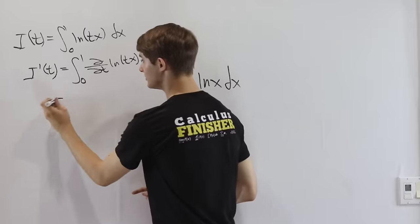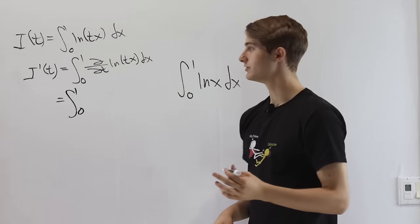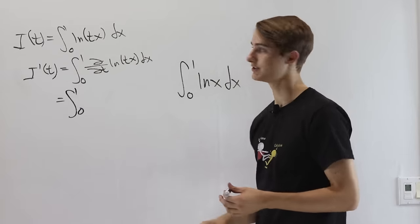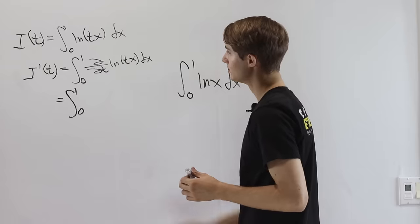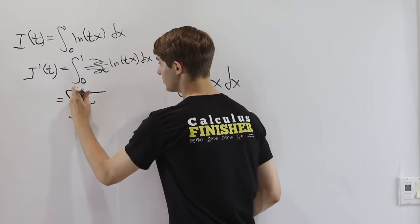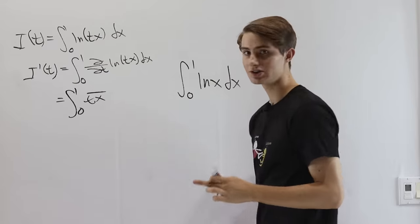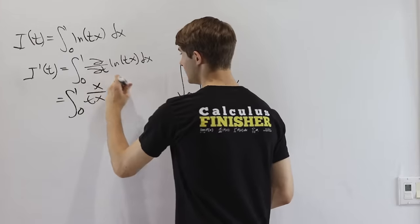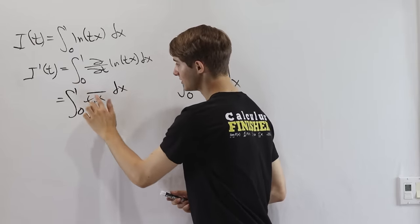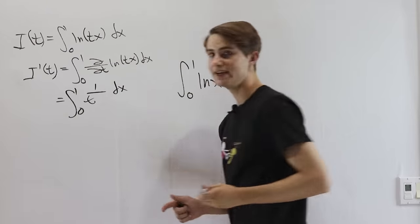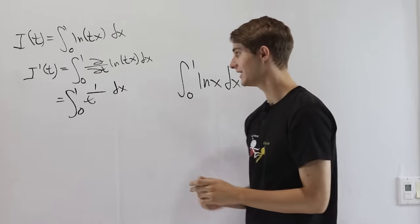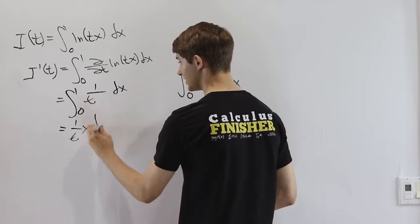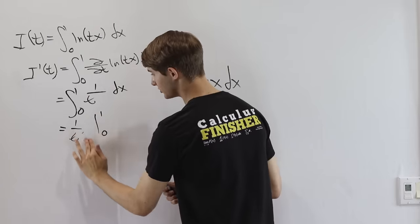The partial derivative with respect to t just means we pretend anything that's not t is a constant. So x is a constant and we differentiate with respect to t. The derivative of natural log of tx is 1 over tx, and then by the chain rule, the derivative of tx — since x is a constant — gives us x on top. Notice x is on the top and bottom, so they cancel, and we just end up with 1 over t dx. Since 1 over t is a constant with respect to x, integrating gives 1 over t times x, evaluated at 1 and 0, which gives us 1 over t.